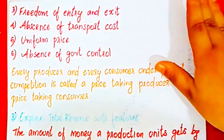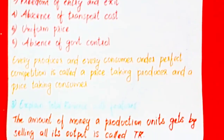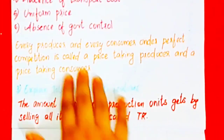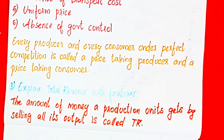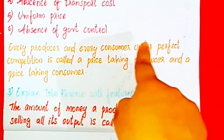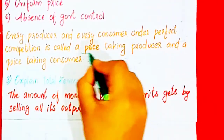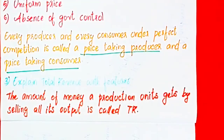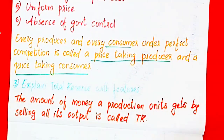Now, every producer and every consumer is called a price-taking producer and price-taking consumer. Buyers and sellers are all called price takers.